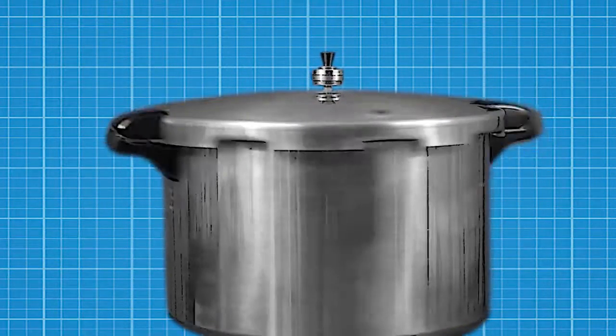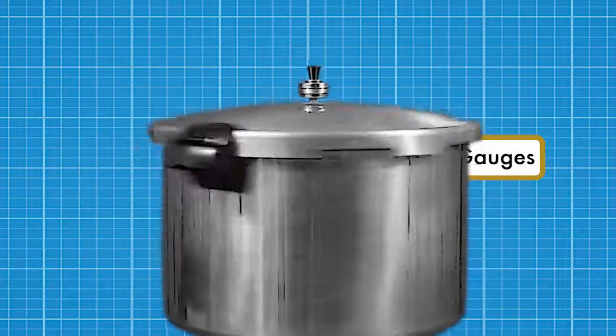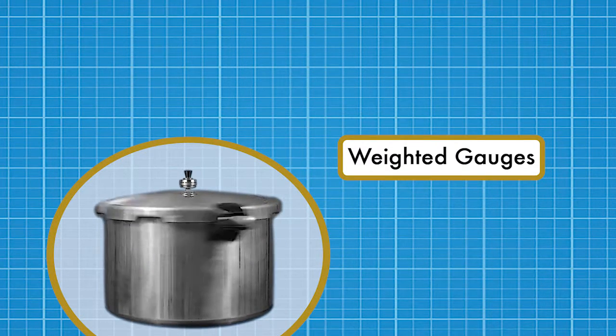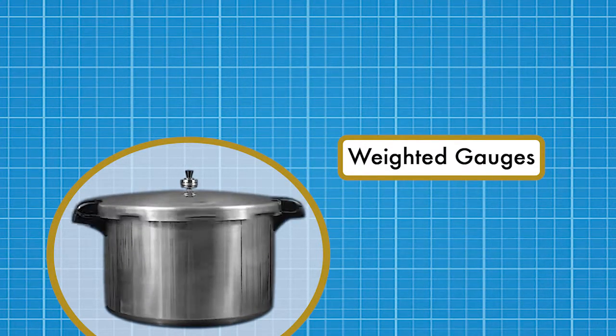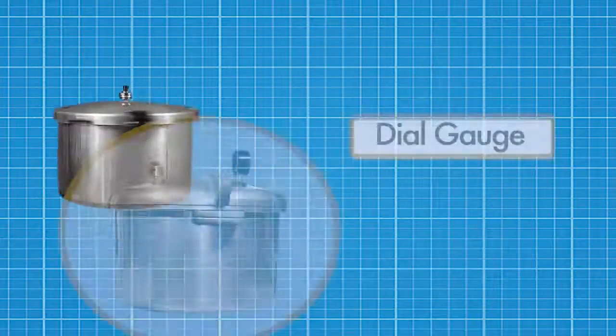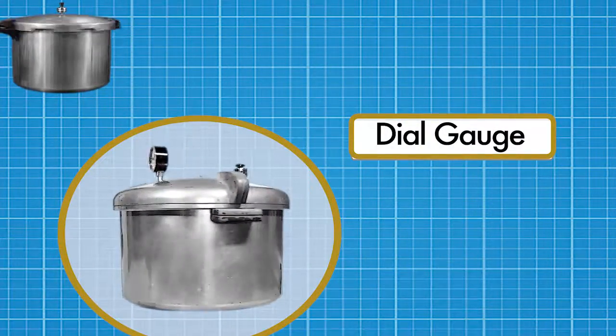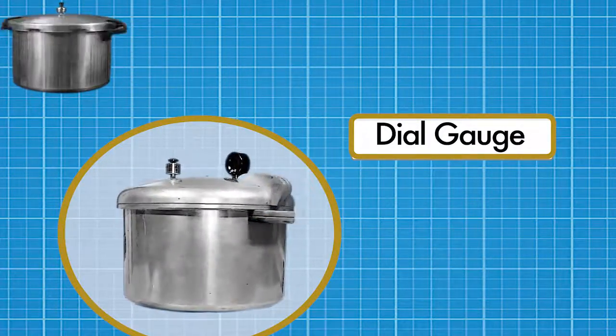So to begin with let's look at the different types of pressure canners. Weighted gauges are simple, robust, and don't need to be tested for accuracy. Dial gauges are precise but need to be tested annually to make sure they're calibrated properly.